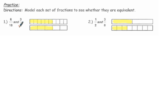So let's model 6 tenths and 3 fifths. We can see that 6 tenths is equivalent to 3 fifths, but we can also see that 1 half is greater than 3 eighths, so we would say these are not equivalent fractions.